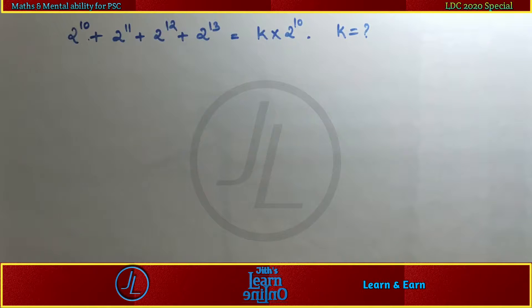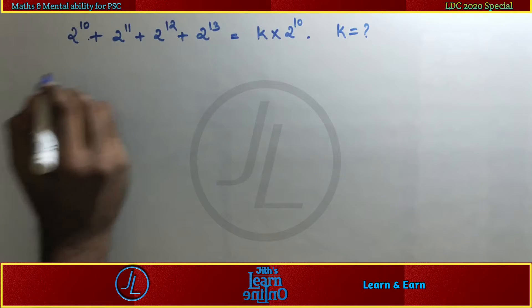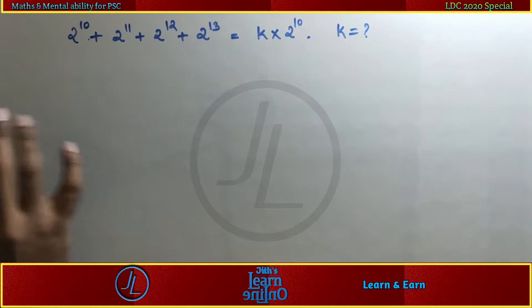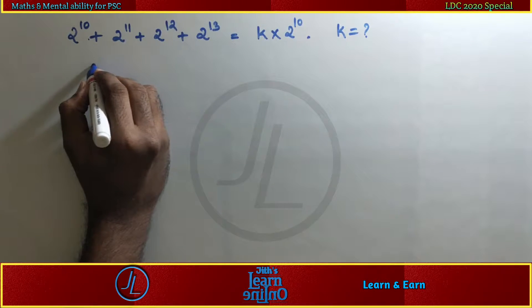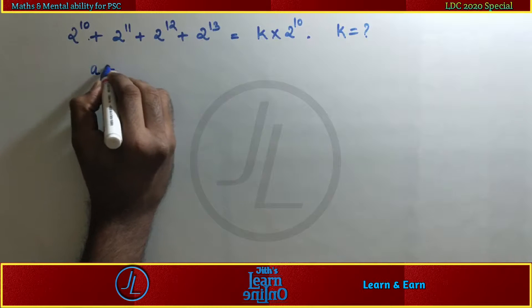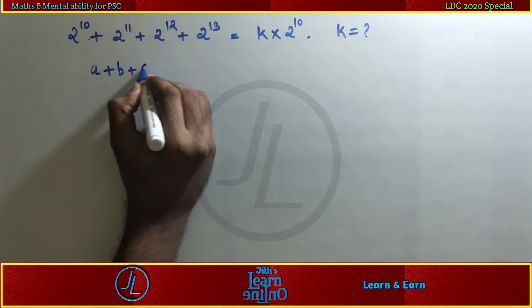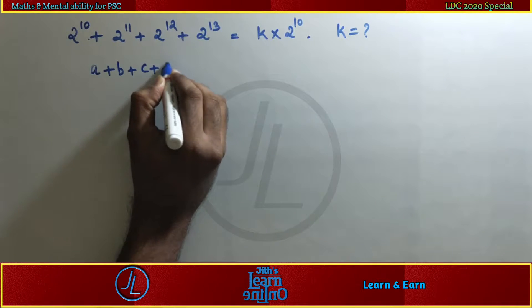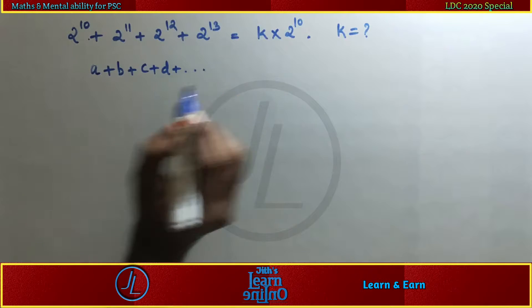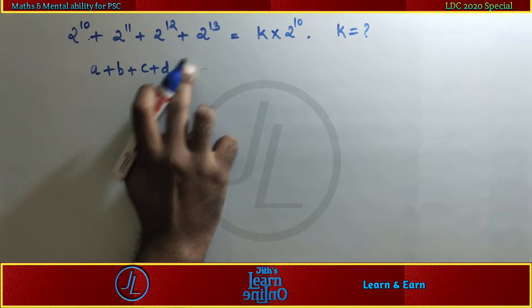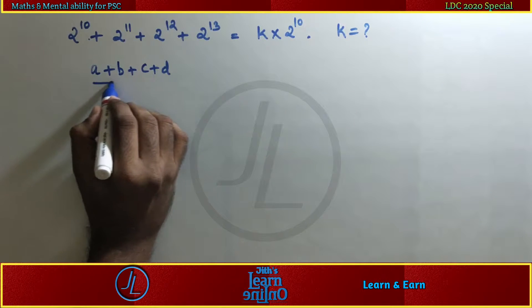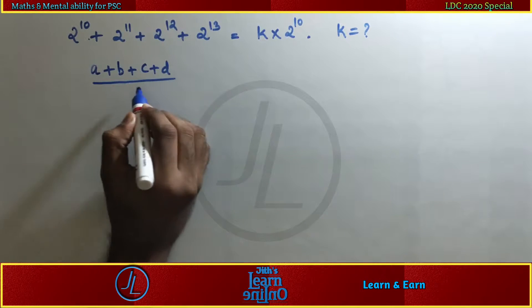This problem has two things. The first thing is, we have to handle it. The numerator is a plus b plus c plus d, and the denominator is a plus z.